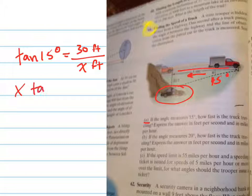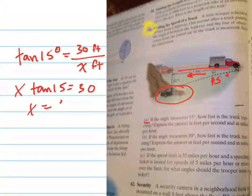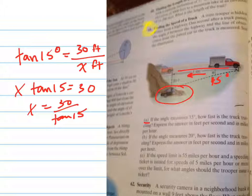So x times tangent of 15 equals 30. So x equals 30 divided by tangent of 15. Make sure your calculator is in degrees and you get x equals 111, actually it's just about 112 feet. So 112 feet per one second.